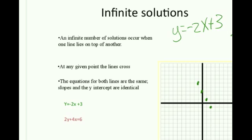Once we've put this in slope-intercept form, we see that both lines are the same line. An infinite number of solutions means that one line is laid on top of another. At any given point, the equations are equal.